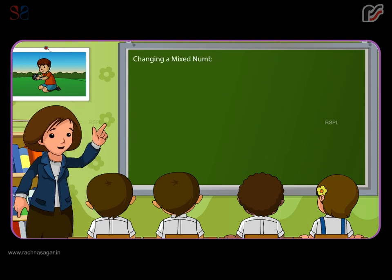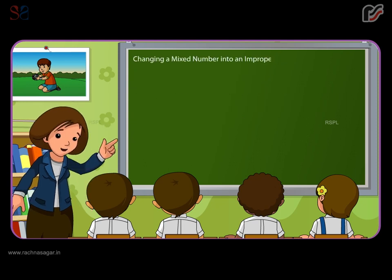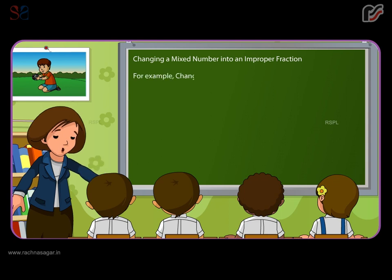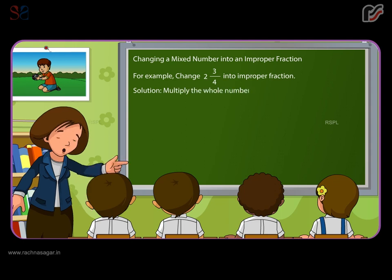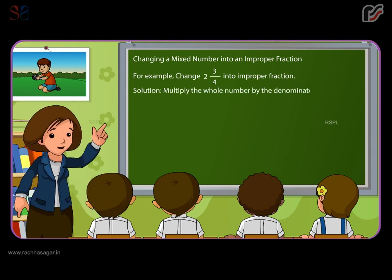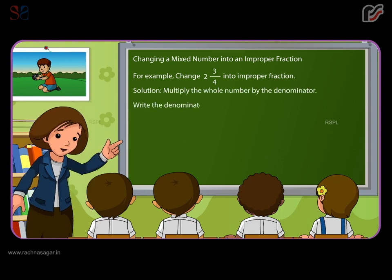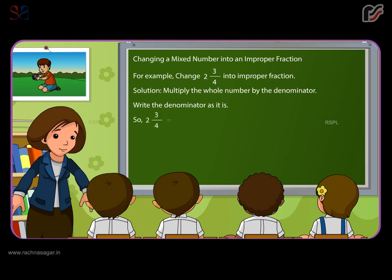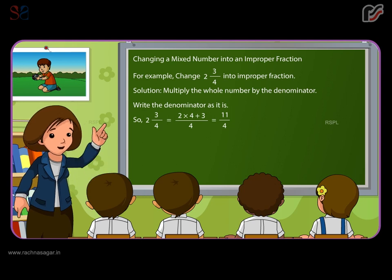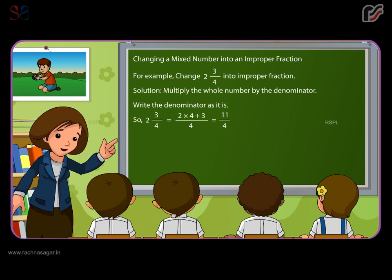Changing a mixed number into an improper fraction. For example, change two and three by four into an improper fraction. Multiply the whole number by the denominator and write the denominator as it is. So two and three by four is equal to two multiplied by four plus three, whole divided by four, which equals eleven by four.